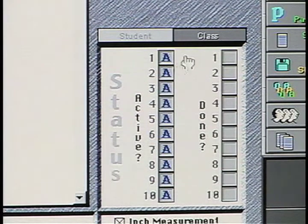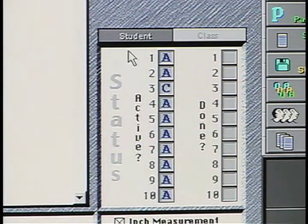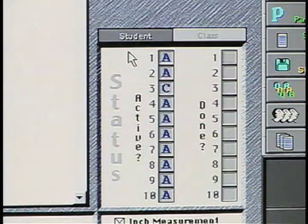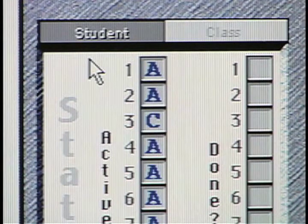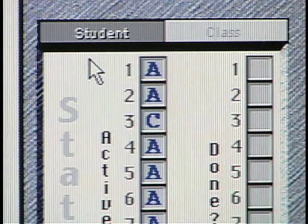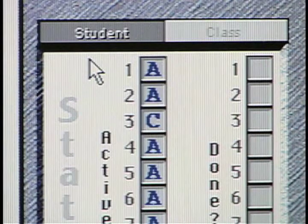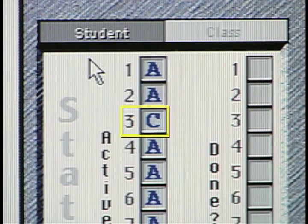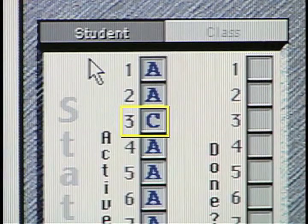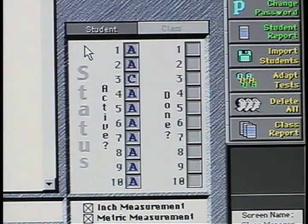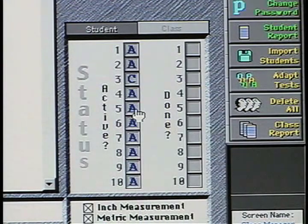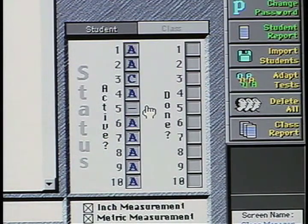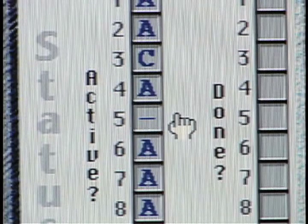An active lesson has a letter A displayed. If the instructor makes a test inactive for the class, a letter C appears in the active column. If the leader turns the test off for the class, no one in the class will be presented that test. In this example, no one in this class will see test 3 until the leader turns it back on. The instructor can also set the test status for individual students. With a test set to inactive, no letter appears and that test is skipped over and the student sees the next active test.